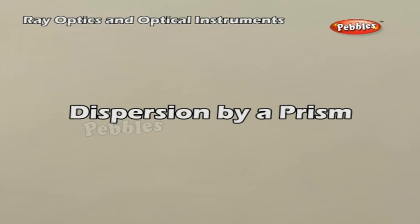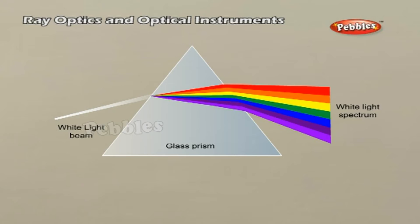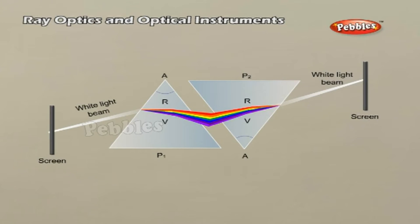Dispersion by a prism. In a classic experiment, Isaac Newton put another prism in an inverted position and let the emergent beam from the first prism fall on the second prism. The resultant emergent beam was found to be white light. The first prism splits the white light into its component colors while the inverted prism recombines them to give white light. Thus, white light itself consists of light of different colors which are separated by a prism. An actual ray is really a beam of many rays of light. Each ray splits into component colors when it enters the glass prism, and when those colored rays come out on the other side, they again produce a white beam.